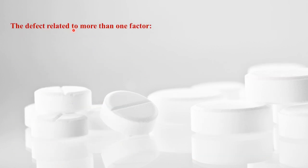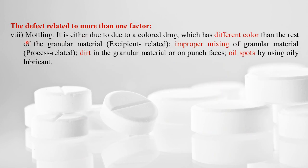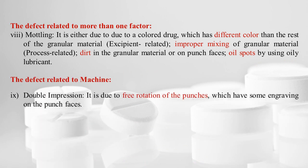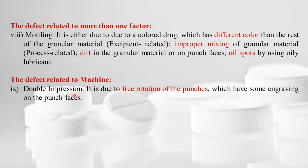Next is defects related to more than one factor. Mottling may result from a colored drug that has a different color from the excipients, improper mixing of granular material, dirt in the granular material, or oil spots from oily lubricants. Double impression is related to the machine — it is due to free rotation of punches that have engraving on the punch faces.